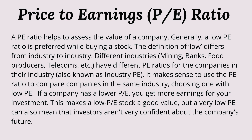Then we have the price-to-earnings ratio, or the P-E ratio. A P-E ratio helps to assess the value of a company. Generally, a low P-E ratio is preferred when choosing stocks. The definition of low differs from industry to industry. Different industries have different P-E ratios for the companies in their industry, also known as industry P-E. It makes sense to use the P-E ratio to compare companies in the same industry, choosing one with the lower P-E. If a company has a lower P-E, you get more earnings for your investment, making a low P-E stock good value.